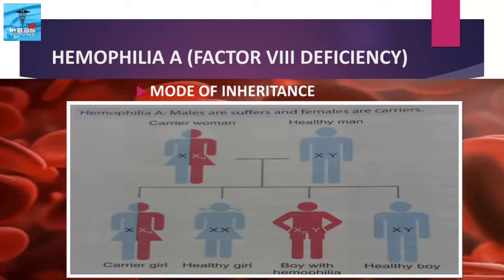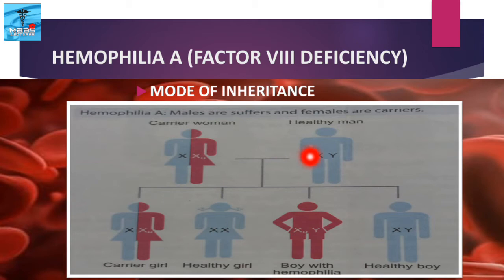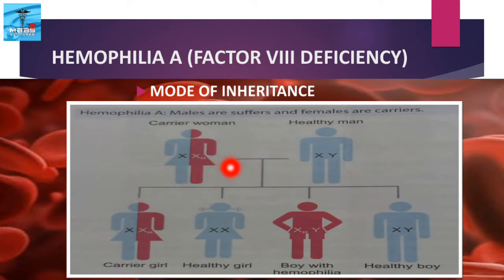Males are sufferers and females are carriers. When a carrier woman with one defective X chromosome marries a man with a healthy X chromosome, the male children will be either Haemophilic or healthy, but female children will be either carriers or healthy girls.